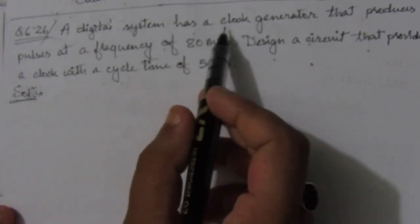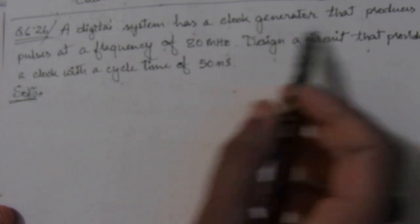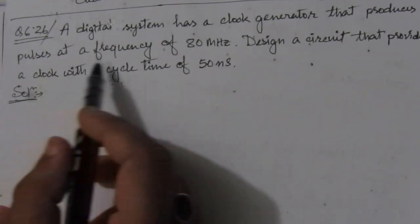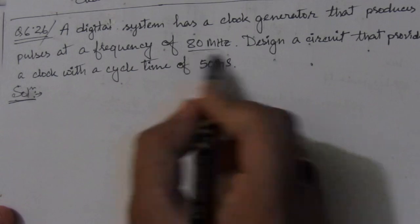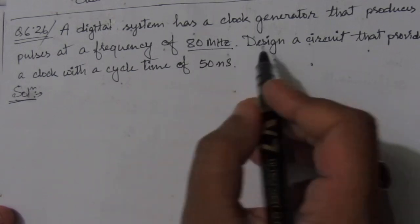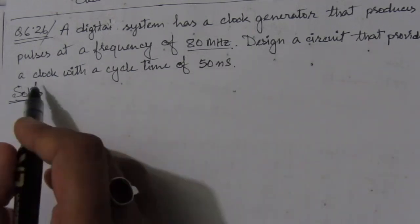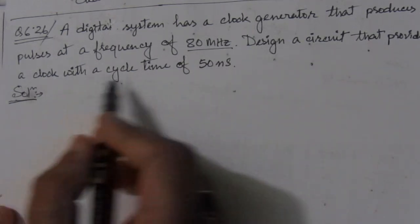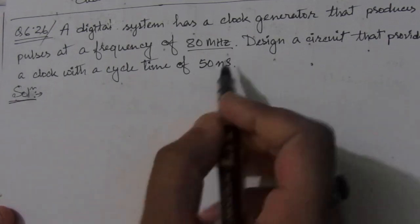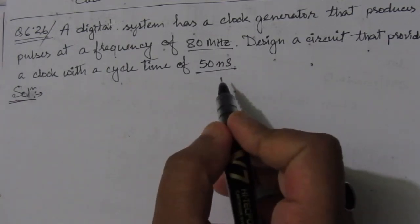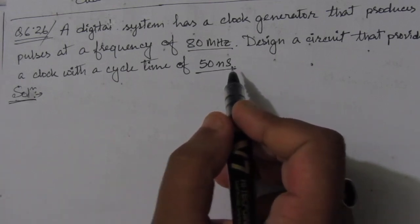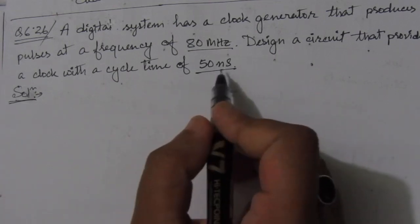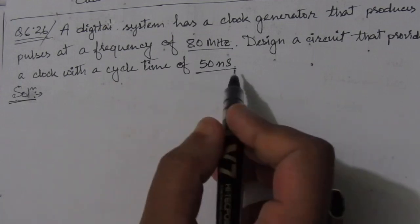A digital system has a clock generator that produces pulses at a frequency of 80 MHz. This is the frequency of the clock signal. We have to design a circuit that provides a clock with a cycle time of 50 nanoseconds. Cycle time means it is the time period of the pulses, and we have to design a circuit that will give this much cycle time.